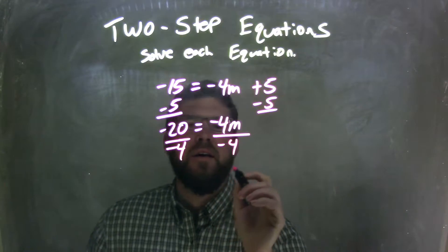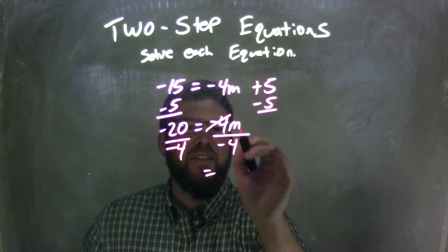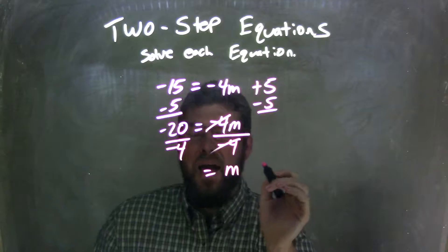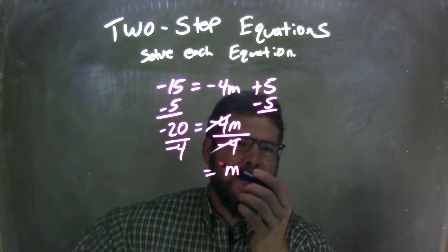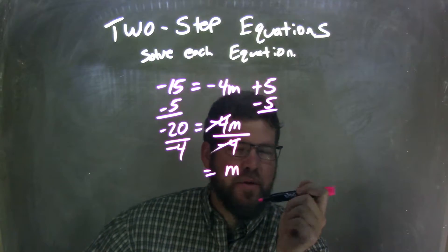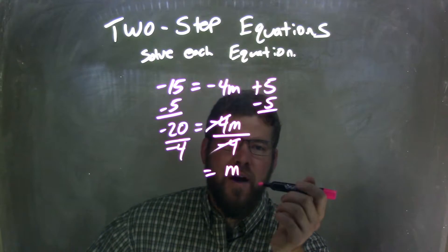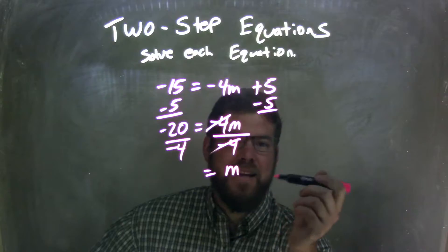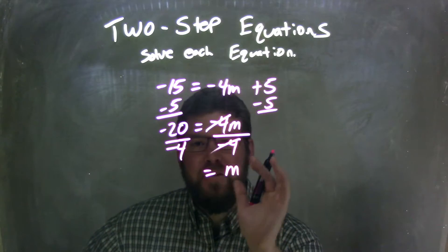And on the right, the negative 4 is canceled, leaving me with m. And then on the left, I have negative 20 divided by negative 4. A negative divided by a negative is a positive, so 20 divided by 4 is 5, and so negative 20 divided by negative 4 is positive 5.